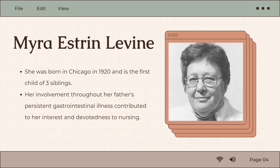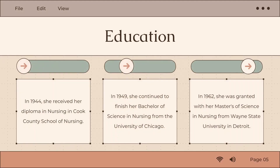It was her involvement throughout her father's persistent gastrointestinal illness that contributed to her interest and devotedness to nursing. As for her education, in 1944 she received her diploma in nursing from Cook County School of Nursing. In 1949 she finished her Bachelor of Science in Nursing from the University of Chicago, and in 1962 she was granted her Master's of Science in Nursing from Wayne State University in Detroit.